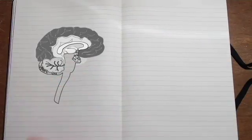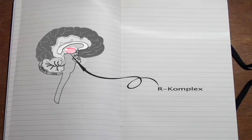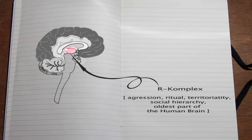Capping the brain stem is the so-called R complex, R for reptile. It's the seat of aggression, ritual, territoriality, and social hierarchies.